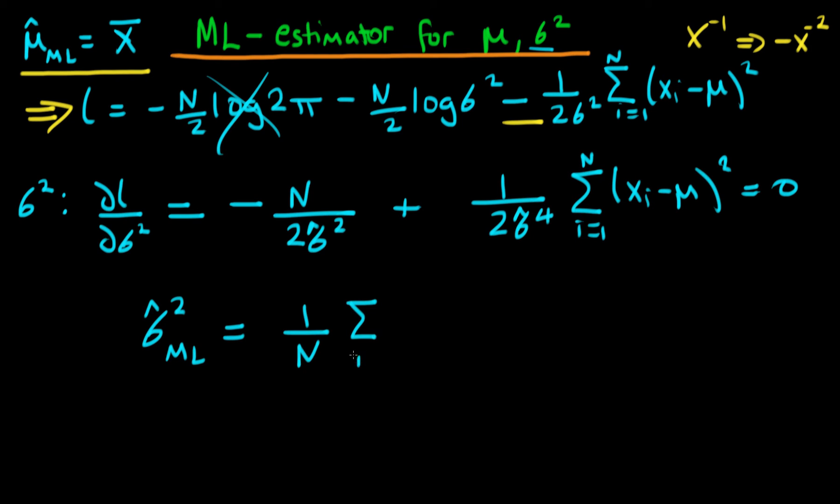When we're actually deriving the maximum likelihood estimators, we should actually be using the maximum likelihood estimator for mu as well. So this is all completely tractable because mu hat maximum likelihood is just x bar.